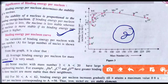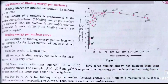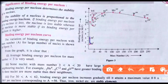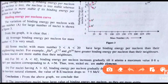Let's discuss the binding energy per nucleon curve — this is important for 2-mark questions. Point one: the average binding energy per nucleon for mass number less than three — like hydrogen, helium, lithium — is small. Because of this the graph goes in a straight line initially.